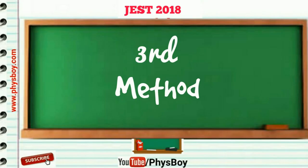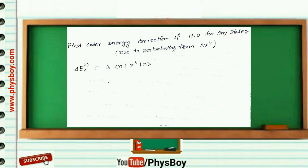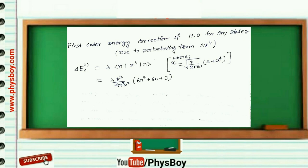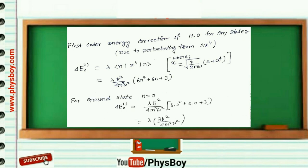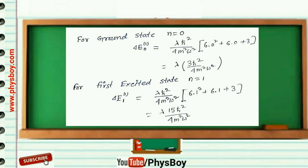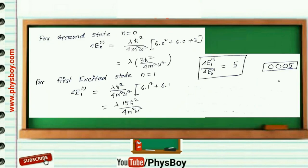Now I am going to discuss the third method. Here you just need to remember a general formula for the harmonic oscillator and you can solve this type of problem in very short time. The first-order energy correction for any state due to the perturbation lambda x to the power 4 is given by a formula. Substituting the expression for x in this formula gives the general result: lambda h-bar squared over 4m-squared omega-squared times (6n squared plus 6n plus 3). Putting n equal to 0 gives delta-E0 and putting n equal to 1 gives delta-E1, and their ratio equals 5.